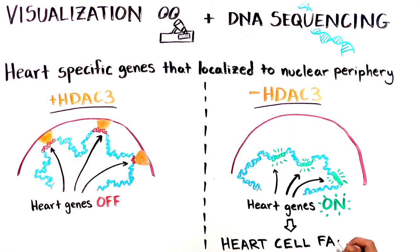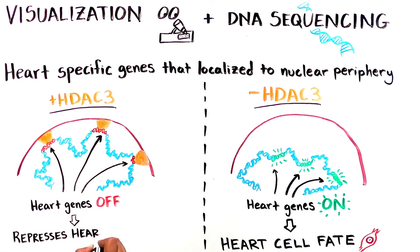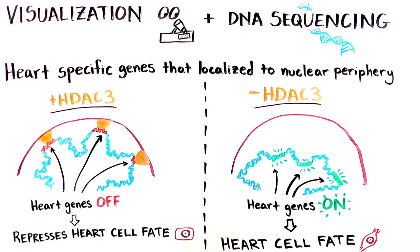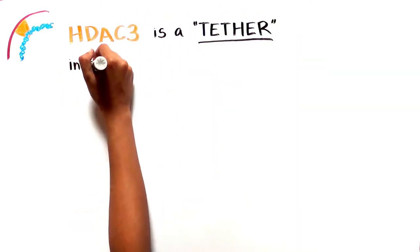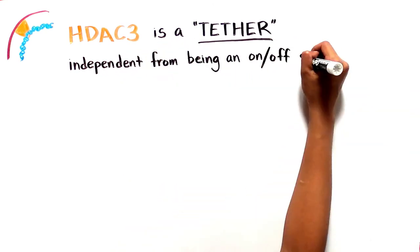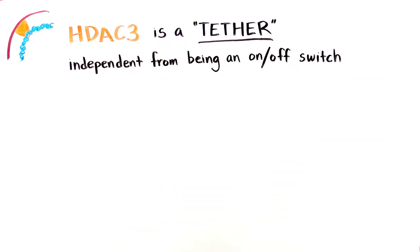When HDAC3 is absent in stem cells, some heart genes erroneously moved to the center of the nucleus, as they would in cells destined to become heart cells. Therefore, in stem cells without HDAC3, the pattern of gene organization is akin to heart cells, which shows that HDAC3 normally represses the heart cell fate by repressing the expression of heart genes in stem cells until the correct environmental signals are present. This study reveals HDAC3's role as a tether, which is particularly interesting because this role is independent of HDAC3's well-defined role in regulating a gene's on/off state.